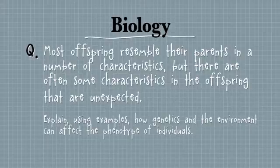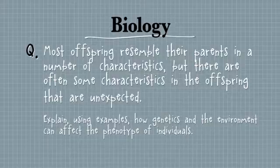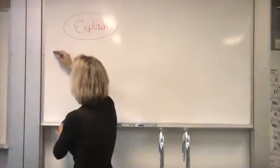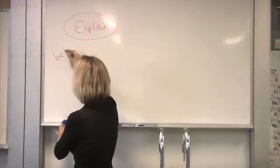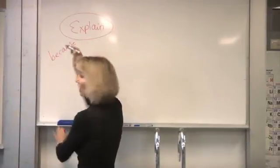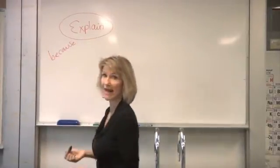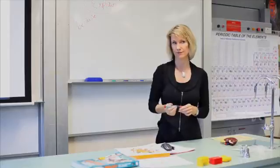This question is asking you to explain, so the first thing we do is take note of the verb. If it says explain, they're asking for a reason. I'd like you to put a circle around that, and I would write next to it: I have to have 'because' in my answer. That means I've given a reason.